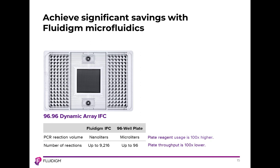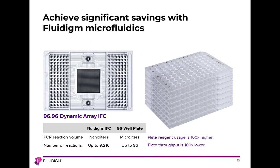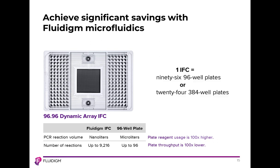One of the elements of our integrated fluidic circuits is the cost savings. Comparing to traditional microtiter plates, it's possible to generate several thousand reactions with a single IFC. With a 96.96 dynamic array IFC — 96 samples and 96 assays all tested combinatorially — you can use one IFC to process the equivalent of 96 ninety-six-well plates or 24 three-hundred-eighty-four-well plates, getting thousands of reactions in a single run.